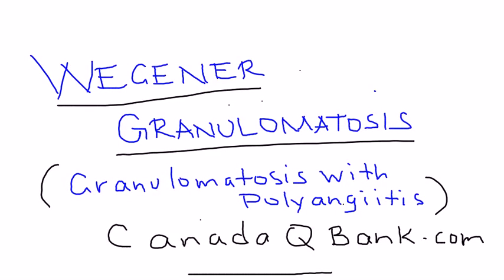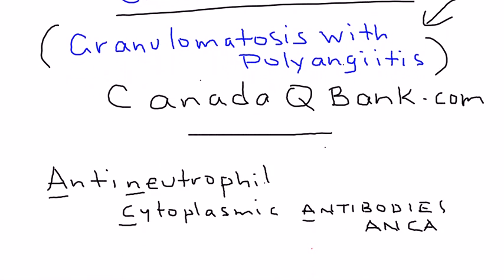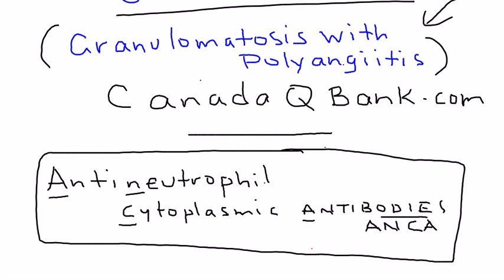Wegener's granulomatosis is the topic for this video. The interesting new name given to this disease is granulomatosis with polyangiitis. One key element of this disease is an autoantibody called antineutrophil cytoplasmic antibodies — antibodies that cause damage, abbreviated ANCA.